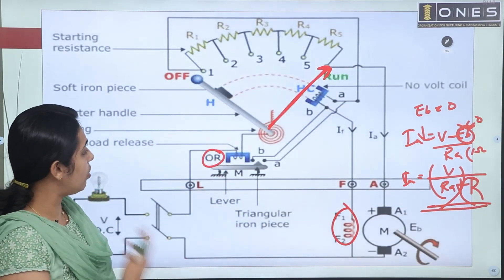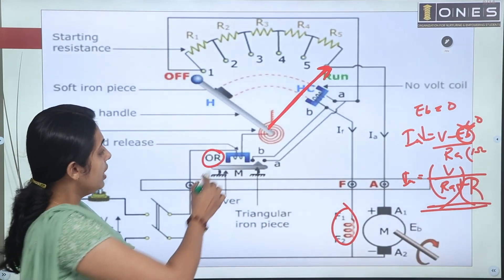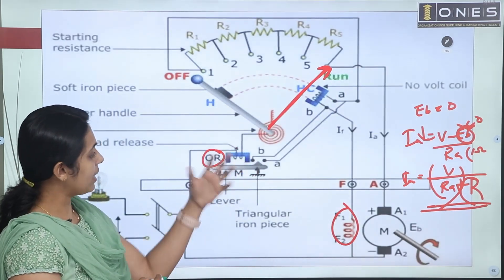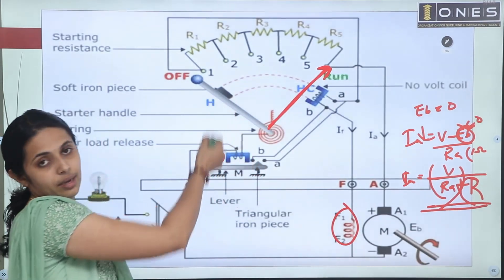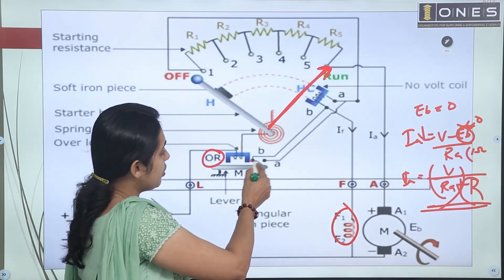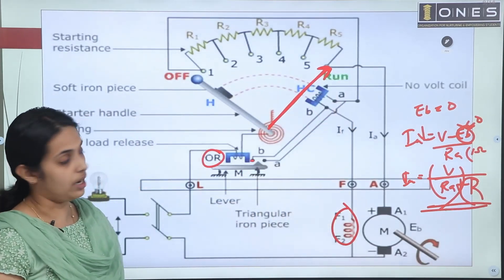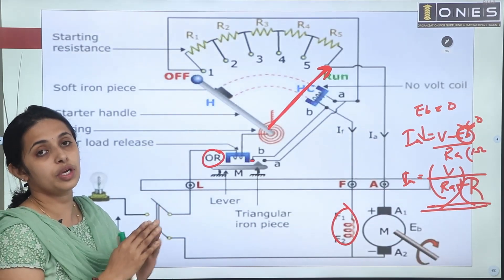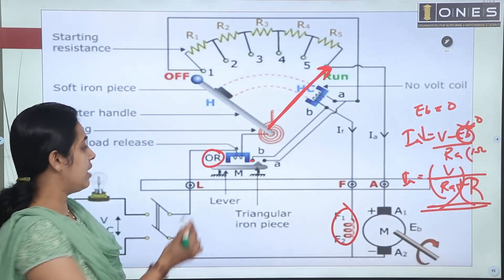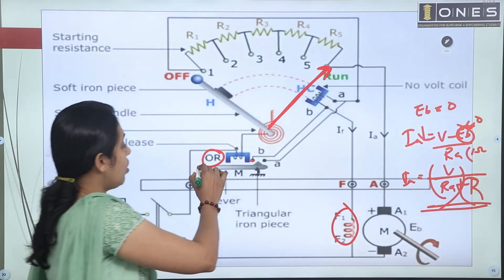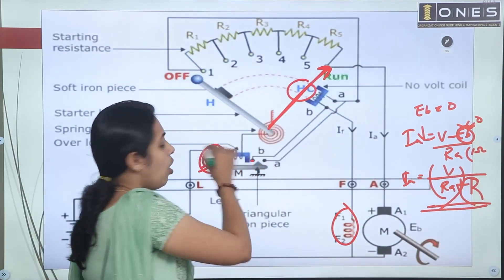The other protective function is the overload release coil. In the case of overload, a magnet attracts the armature, short-circuiting the holding coil terminals, which de-magnetizes the holding coil. The spring returns the arm to off position, protecting the motor. So the 3-point starter has two coils: the holding coil and the overload release coil.